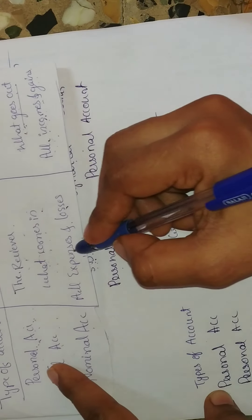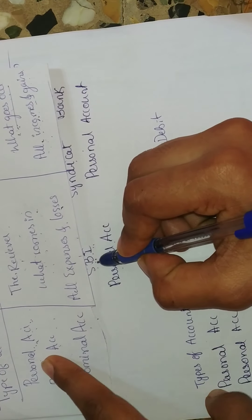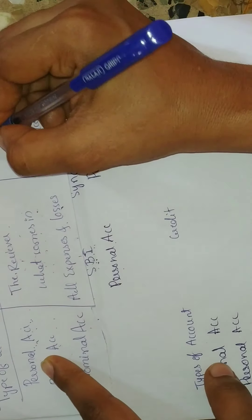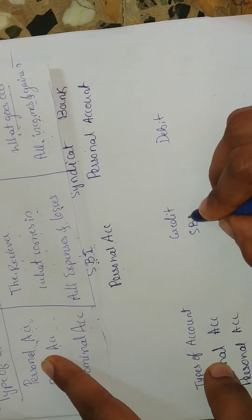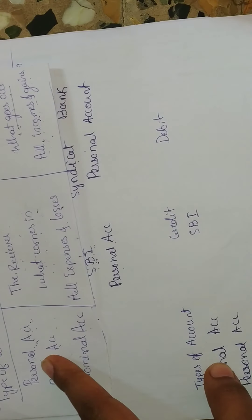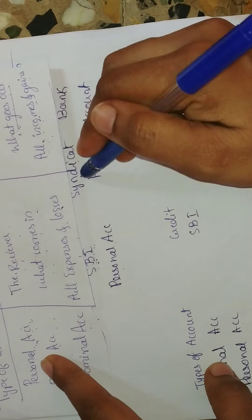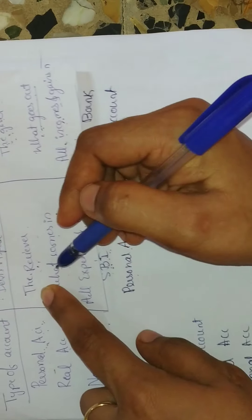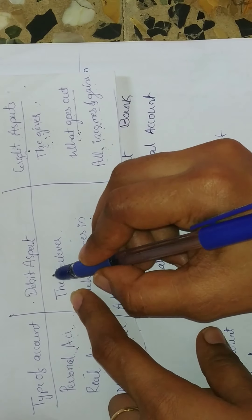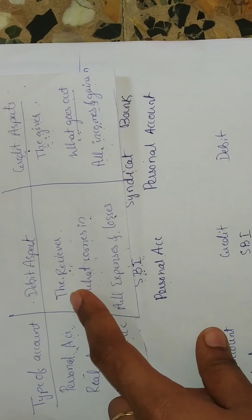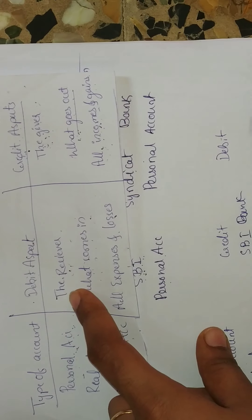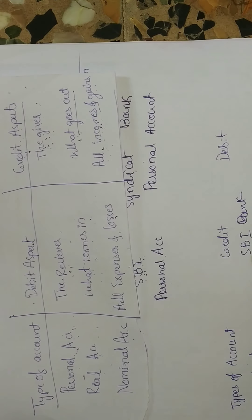Following the golden rule for personal account: we are transferring amount from SPI Bank to Syndicate Bank, so SPI Bank is the giver — SPI Bank will come under the credit aspect. Syndicate Bank is receiving the amount, so Syndicate Bank is the receiver — Syndicate Bank will come under the debit aspect. In this transaction, SPI Bank is credit and Syndicate Bank is debit.